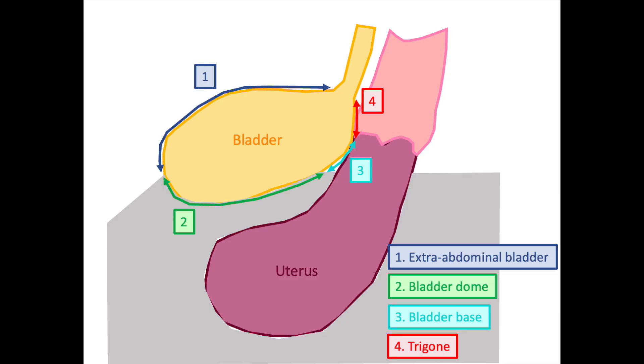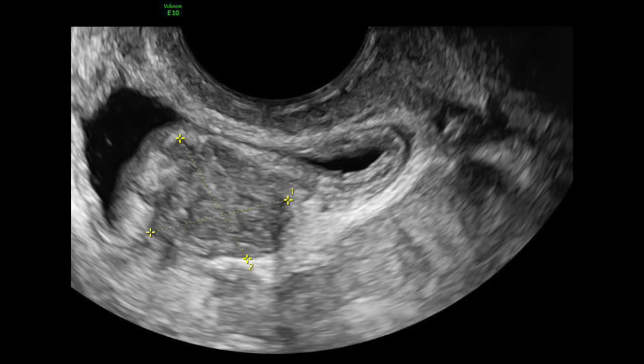This specific nodule is located at the bladder base and extends to the bladder dome. In fact, bladder deep endometriosis most commonly develops in the bladder base and dome, rather than in the extra-abdominal bladder. Here is another case where the nodule can be seen at the bladder dome.